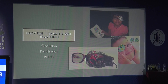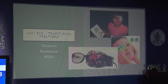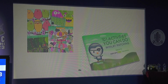Traditional treatments — occlusion and penalization — guided by PEDIG protocols are the gold standard, especially in severe amblyopia in very young children. The new modalities are not going to replace patching or penalization in severe amblyopia. Patching works in all cases, whereas none of the newer therapies work in all cases. Parents should be counseled: for four to six hours of patching for severe amblyopia, at least three hours should be filled with near activity.